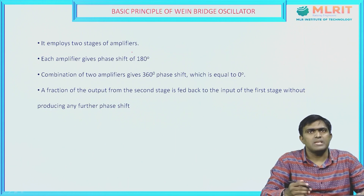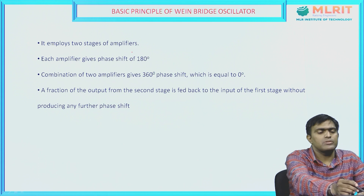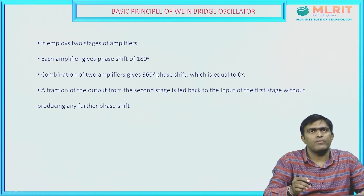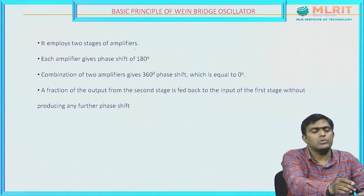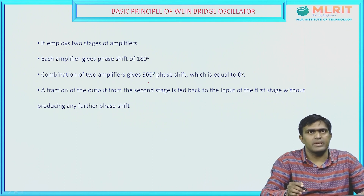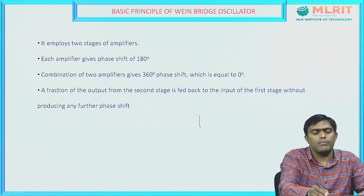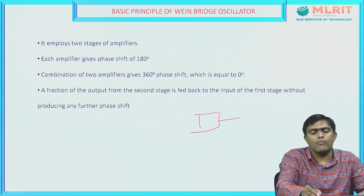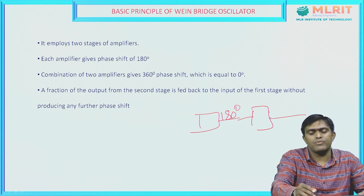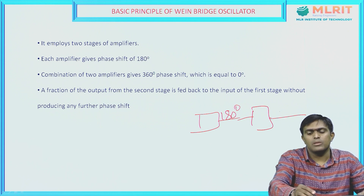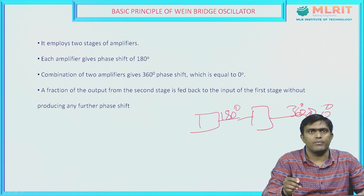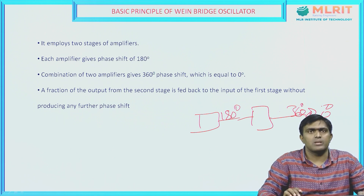What is the basic principle of the Wien bridge oscillator? It consists of mainly two stages of amplifiers and each amplifier will have a phase shift of 180 degrees. So the total phase shift will be 360 degrees — the first amplifier gives 180 degrees and the second amplifier gives another 180 degrees, resulting in 360 degrees or 0 degree phase shift, which satisfies our Barkhausen criteria.